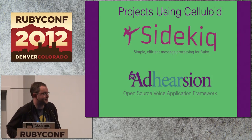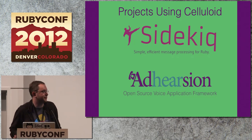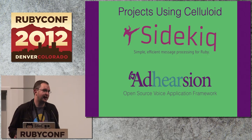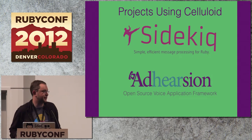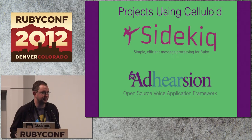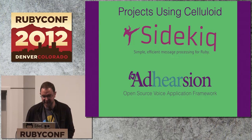Celluloid isn't a science experiment — there are people actually using it in the real world. A couple of projects: Sidekiq, which is a badass job execution engine. And also Adhearsion. Celluloid is kind of inspired by Erlang, which was originally created to do telephony. Adhearsion is a pretty cool telephony framework in Ruby using Celluloid to do command and control of telephone calls. I definitely recommend checking out both of these projects.